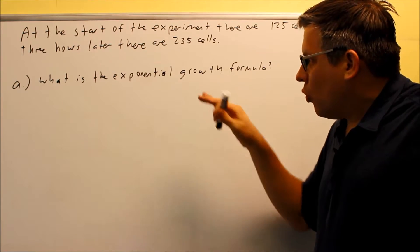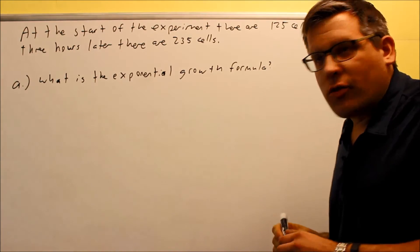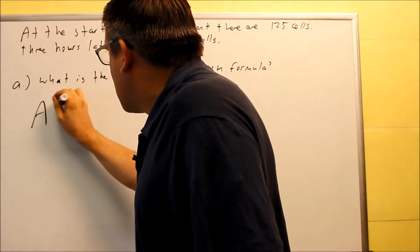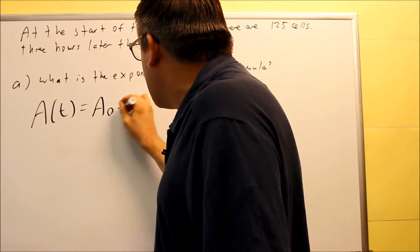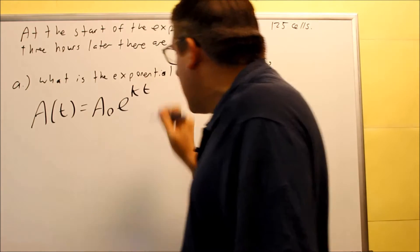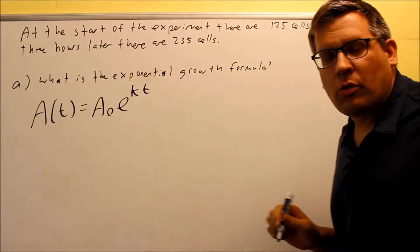We want to start with the basic growth formula. So for this section, it looks like this: A(t) is equal to A₀ times e to the kt. This is our general growth formula that was given in the notes.